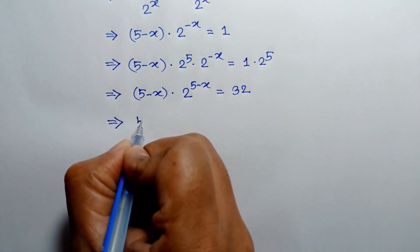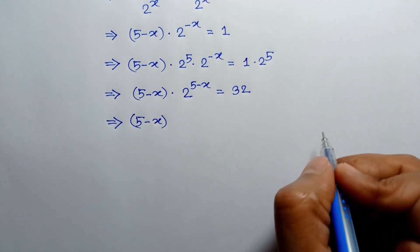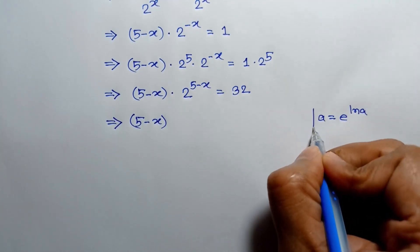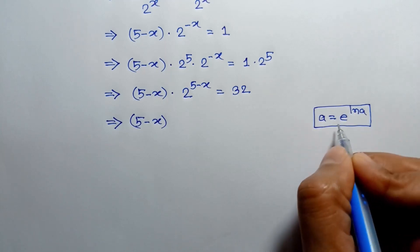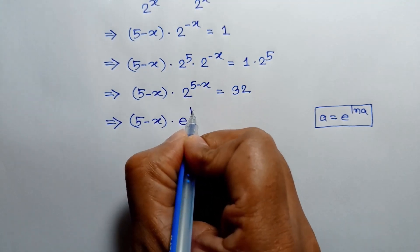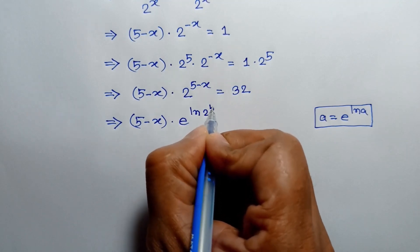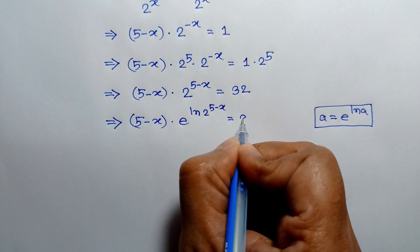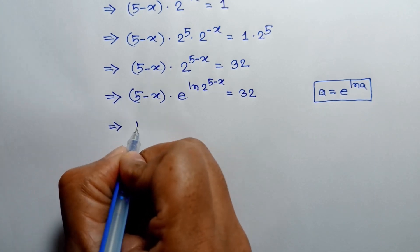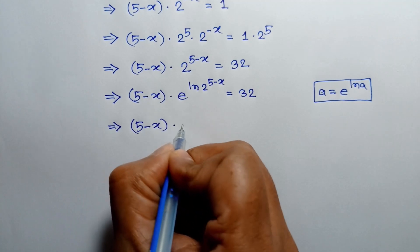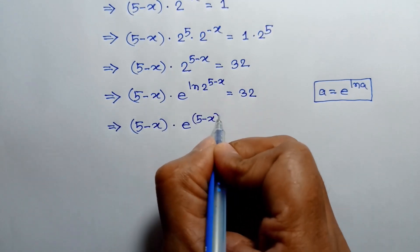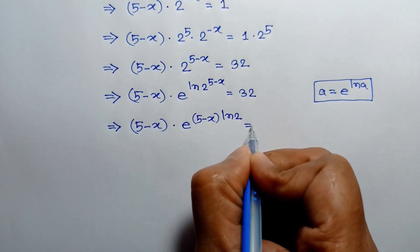According to the law A is equal to e to the power ln of A, applying this formula, 2 to the power (5 minus x) can be written as e to the power ln of 2 to the power (5 minus x) is equal to 32. By the law of logarithm, this becomes (5 minus x) times e to the power (5 minus x) times ln 2 is equal to 32.